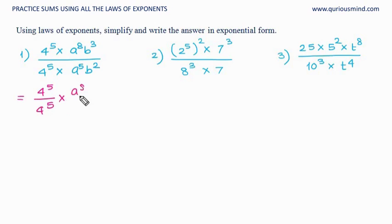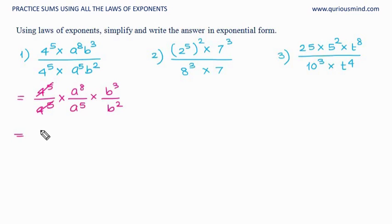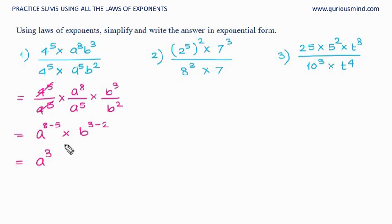We separate into a raised to 8 upon a raised to 5, and b cubed upon b squared. The 4 raised to 5 terms cancel out. For a raised to 8 divided by a raised to 5: same base, so base remains same in the answer, powers subtract — 8 minus 5 gives a cubed. For b raised to 3 divided by b raised to 2: same base, powers subtract — 3 minus 2 gives b raised to 1, which is just b. So the answer is a cubed times b.